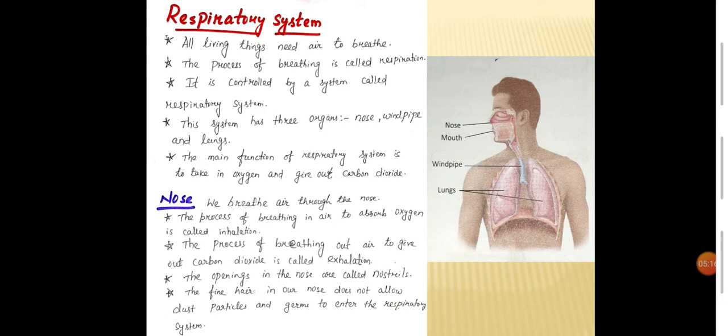Now, the three organs we will discuss one by one. Nose: We breathe air through nose. The process of breathing in air to absorb oxygen is called inhalation. The process of breathing out air to give out carbon dioxide is called exhalation. The openings in the nose are called nostrils. The fine hair in our nose does not allow dust particles and germs to enter the respiratory system.